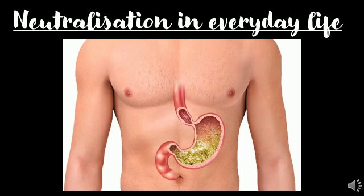First, indigestion. Our stomach contains hydrochloric acid, which helps us digest food. But too much acid in the stomach causes indigestion, which can be very painful. To relieve indigestion, we take an antacid — such as milk of magnesia, which contains magnesium hydroxide — and it neutralizes the excess acid. Antacid pills like Gelusil are taken by people suffering from acidity to neutralize the stomach acid.